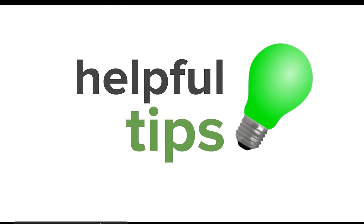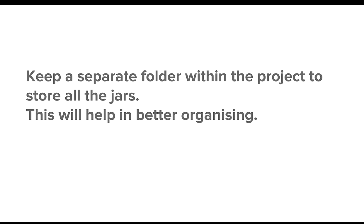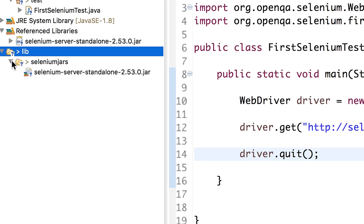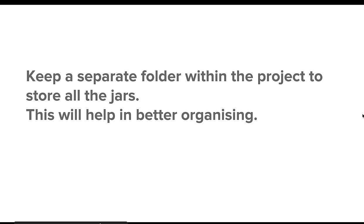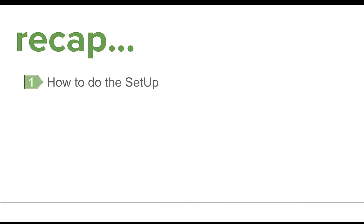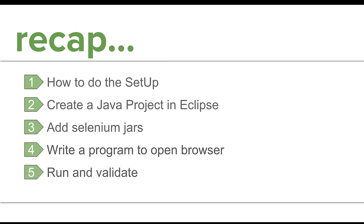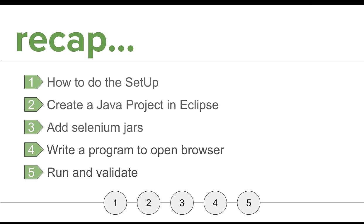Some helpful tips: it is always convenient to create a separate folder within your project to store all your libraries, as I have done with the 'lib' folder. You can also create a Maven project and have all dependencies managed by the Maven POM file, but for now we keep this structure. To recap: we did the setup, created a Java project in Eclipse, added the Selenium jars, wrote a program to open the browser, and ran and validated it. In the next session we will replace Selenium 2 with Selenium 3 and see what changes need to be made.